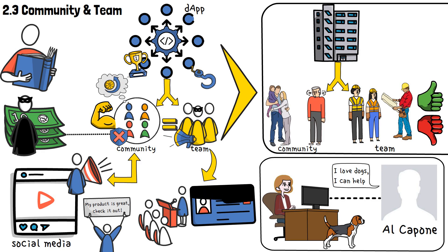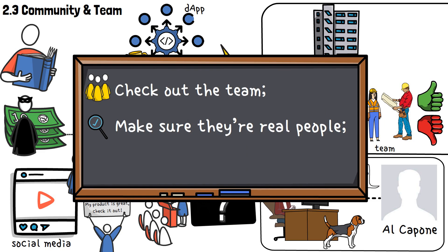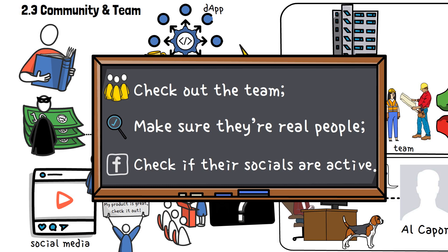If a public business has to hide something as simple as the founders' names, it definitely sends out a suspicious signal. So, the lesson here is clear. Check out the team, make sure that they're actual, real people who don't try to hide under layers of anonymity. That's done by making sure that their socials are active.